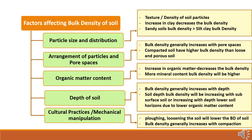Bulk density is affected by soil texture, the density of soil particles, and the arrangement of those particles. Generally, sandy soils have higher bulk density than silt or clay soils because they have less pore space. The various factors affecting bulk density can be classified as: particle size and distribution, arrangement of particles in pore spaces, organic matter content, depth of soil, and cultural practices and mechanical manipulation.